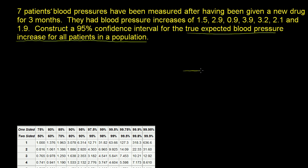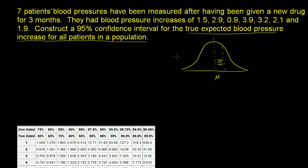There's some population distribution here, and it's a reasonable assumption to think that it is normal — it's a biological process. If you gave this drug to every person who has ever lived, that would result in some mean increase in blood pressure, or maybe it's actually a decrease. There's also going to be some standard deviation. It is a normal distribution because it's a biological process — it's going to be the sum of many thousands and millions of random events, and things that are sums of many random events tend to be normally distributed.